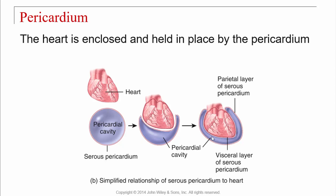There's a pericardial cavity between the layers. In reality, there's almost no space in there. There's going to be some pericardial fluid just enough to relieve friction. That's the function of a serous membrane — to prevent friction. So instead of the heart, while it's beating, rubbing up against the tissues in the chest, it's surrounded by this slippery membrane, and that reduces the friction.